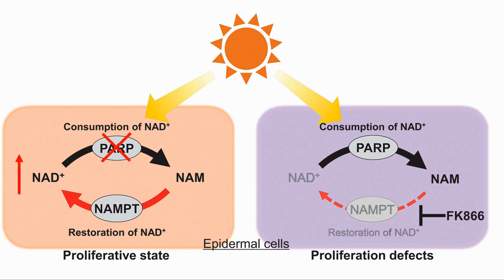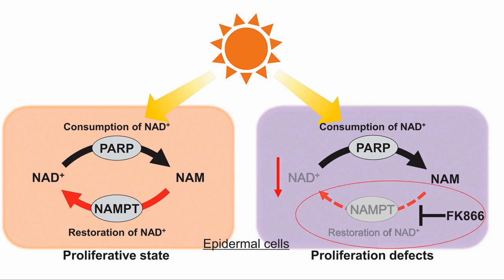They then showed that inhibiting PARP stopped the depletion of NAD. This makes sense as PARP repairs DNA damage — in this case caused by UV radiation — but in doing this, it consumes NAD and converts it to NAM. Next, they used NAMPT inhibitor FK866 to stop the action of NAMPT, which severely depleted the NAD pool, showing that this was the path through which NAD was being restored.